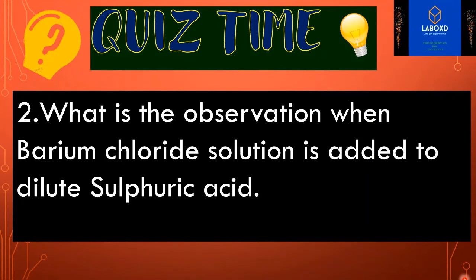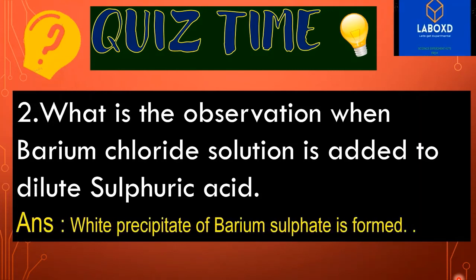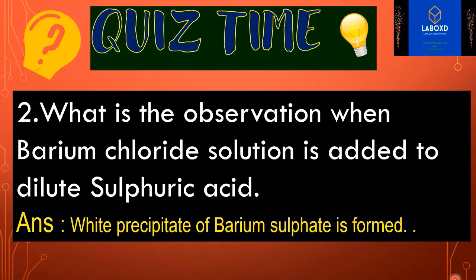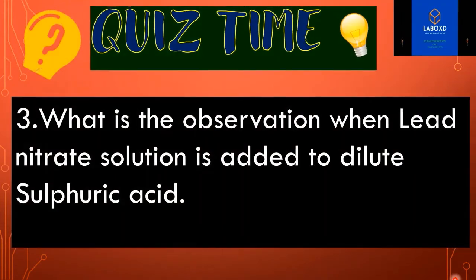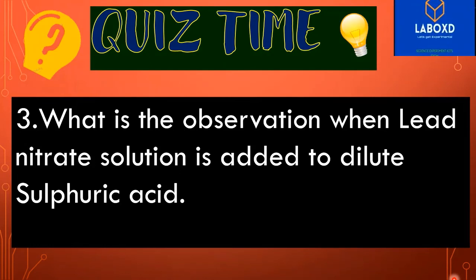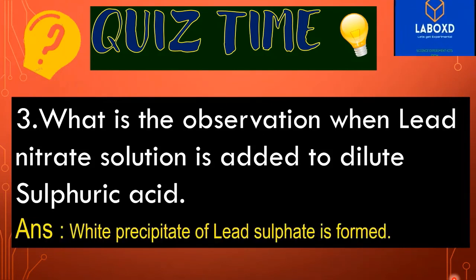Second question: what is the observation when barium chloride solution is added to dilute sulfuric acid? I hope you got the answer. The answer is: a white precipitate of barium sulfate is formed. Third question: what is the observation when lead nitrate solution is added to dilute sulfuric acid? The correct answer is: a white precipitate of lead sulfate is formed.